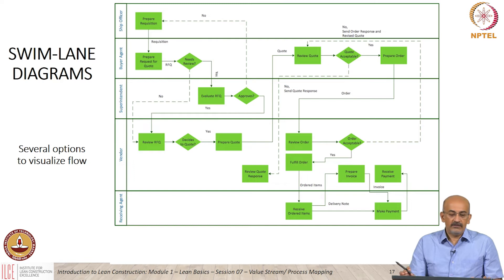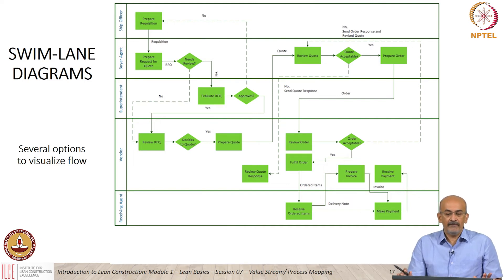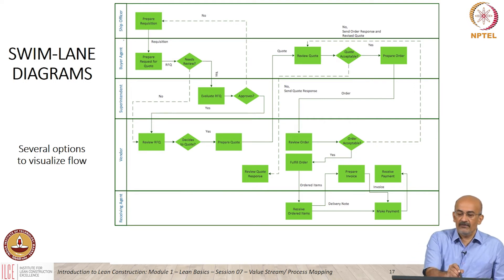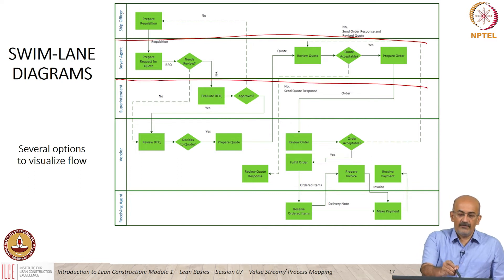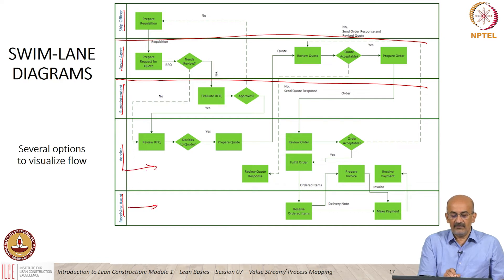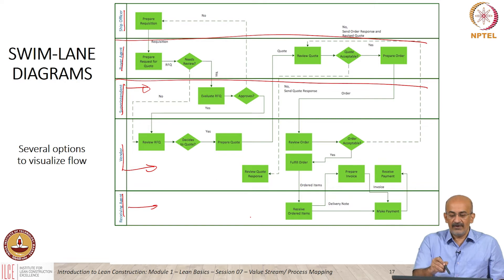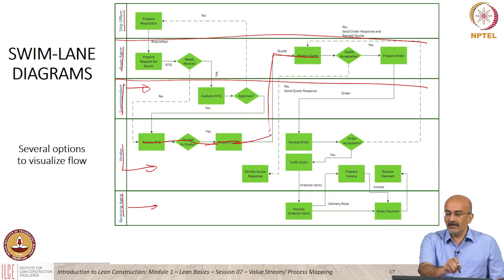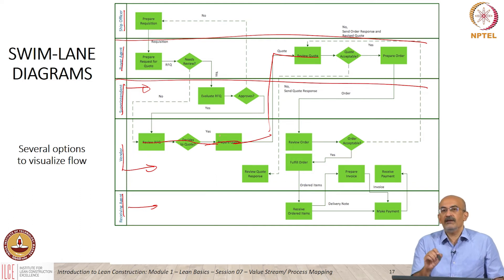Coming to the topic of swim lane diagrams — I am only going to introduce this briefly — this is another very popular way of showing a process. It is called a swim lane diagram like a swimming pool: you have lanes, and different people with responsibilities or different organizational levels are on each lane. For example, there is a lane for the receiving agent, a lane for the vendor, and a lane for the superintendent. As the process flows, it goes through each lane showing what steps it takes. You can represent not only the flow of the process but the person responsible for moving the process, making it very good for visualizing how the process flows through various people or groups in the organization.